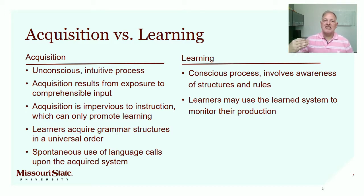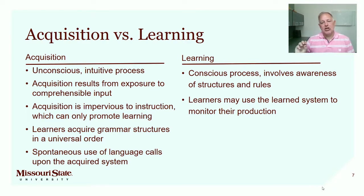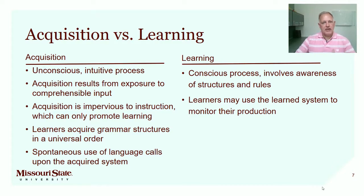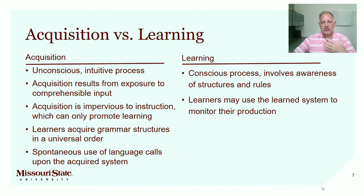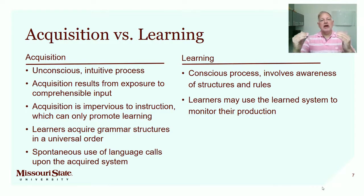Learning, on the other hand, like explicit learning, is a conscious process — it involves awareness of structures and rules. There's another hypothesis in the monitor model called the monitor hypothesis, in which Krashen states that what learners do with information that they've learned explicitly is use it to monitor their output. So as second language learners are speaking, they're using metalinguistic information they've learned to check their production and make sure they're producing as few mistakes as possible. So we have this distinction between acquisition and learning, which aligns very nicely with the distinction between implicit and explicit knowledge.